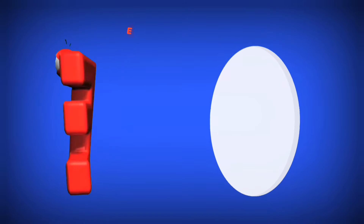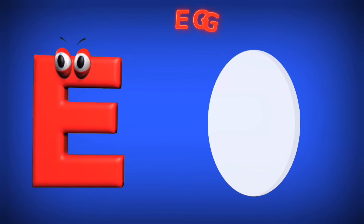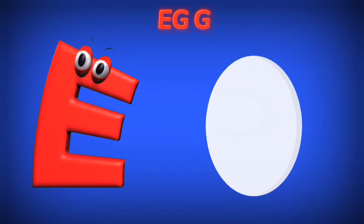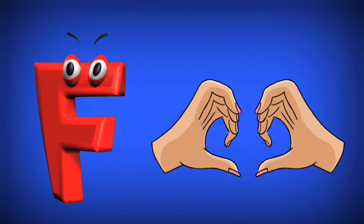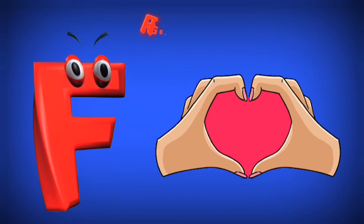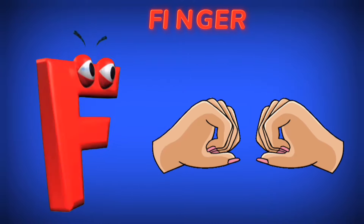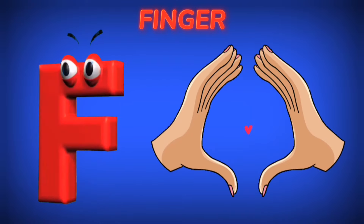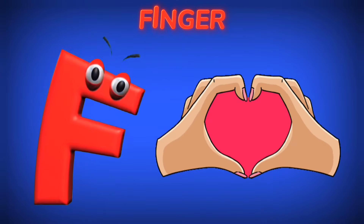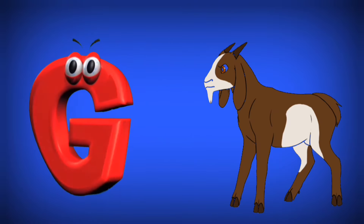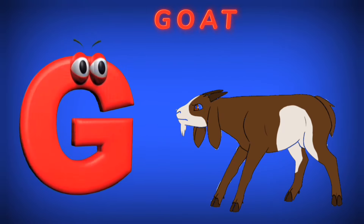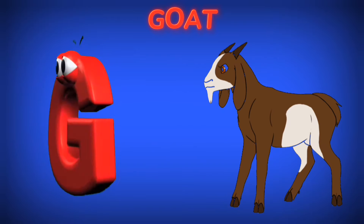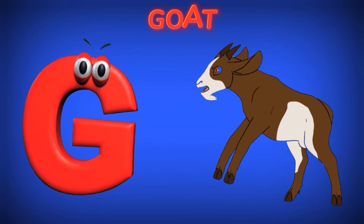D is for Egg. E, E. Egg. F is for Finger. F, F. Finger. G is for Goat. G, G. Goat.